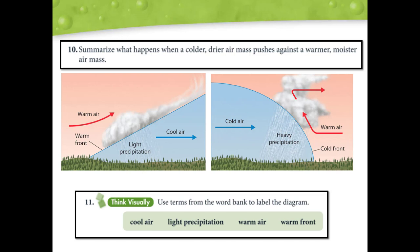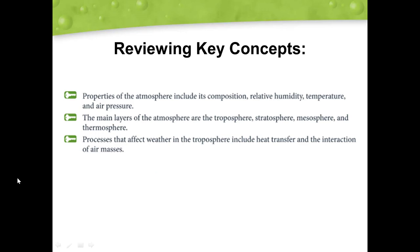Go ahead and look at numbers 10 and 11 in your student workbook. Pause the video as you need. Last, we are going to review the key concepts for the day. First, properties of the atmosphere include its composition, relative humidity, temperature, and air pressure. Next, the main layers of the atmosphere are the troposphere, stratosphere, mesosphere, and thermosphere. And lastly, the processes that affect weather in the troposphere include heat transfer and the interaction of air masses.